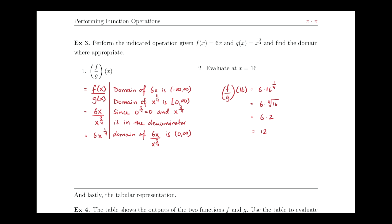f, which is 6x, goes on top. x to the 3 fourths, which is g of x, goes on the bottom.